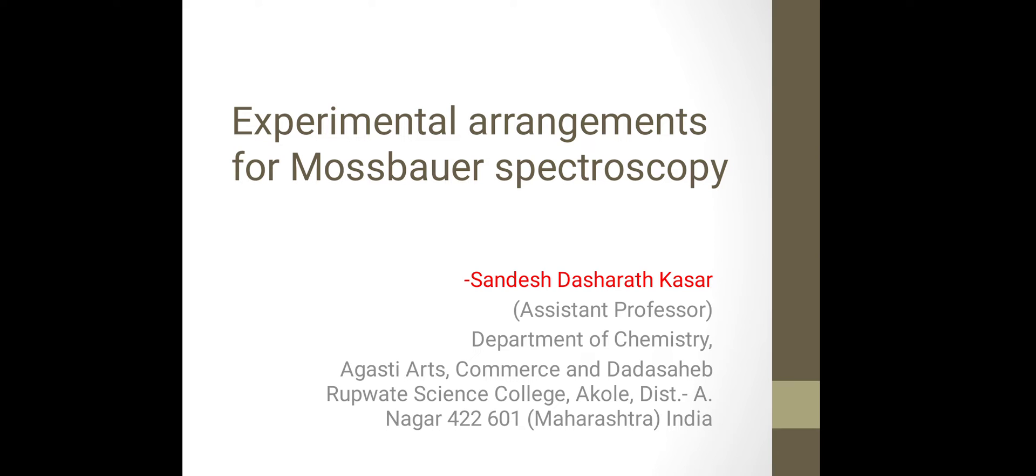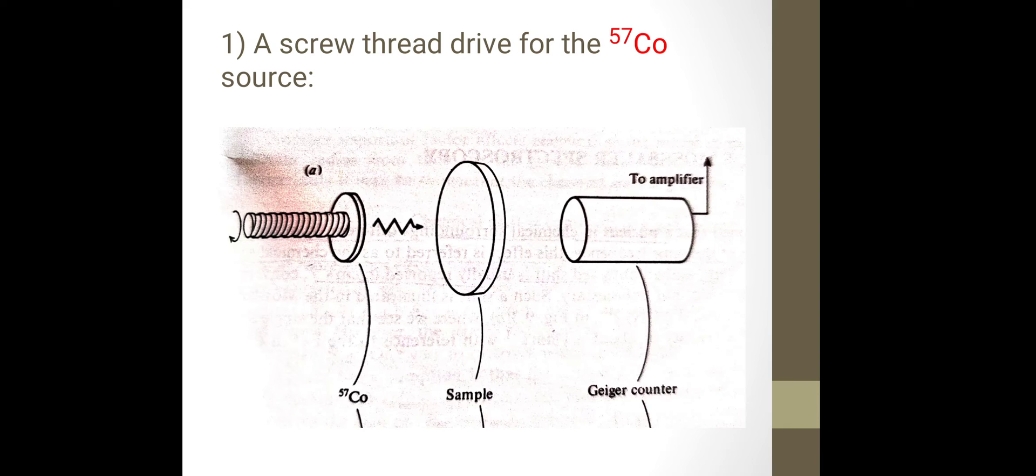Today we are going to study experimental arrangements for Mossbauer spectroscopy. There are two experimental arrangements. First one is a screw thread drive for the cobalt-57 source.